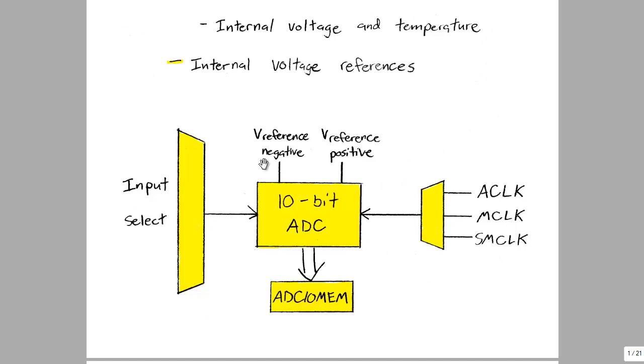On the top here are the voltage references, both positive and negative. The negative voltage reference is usually ground or zero volts. And the positive voltage reference can be anything from 1.5 volts to 2.5 volts, to even the power supply voltage of 3.3 volts.